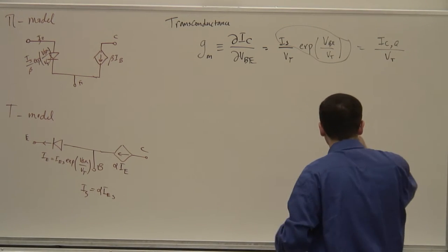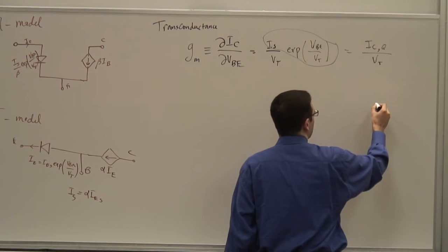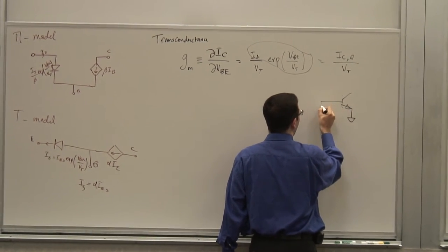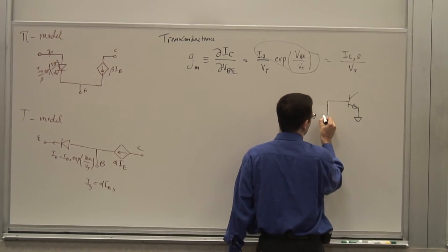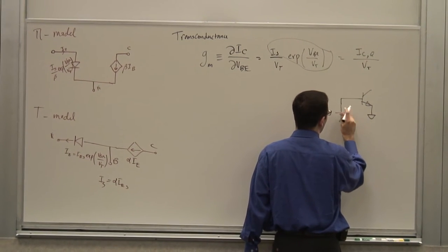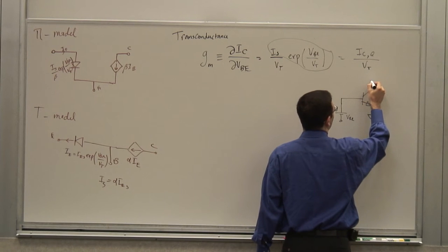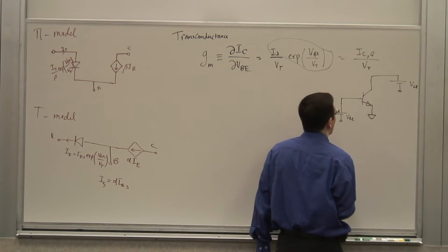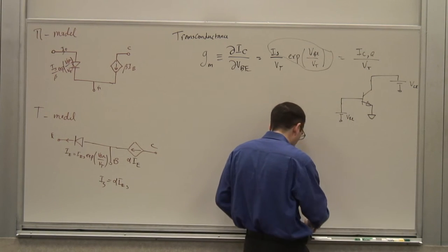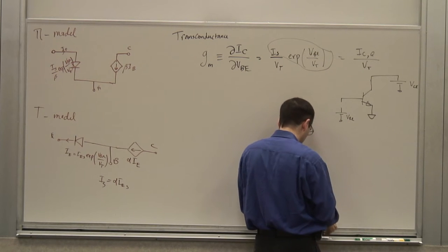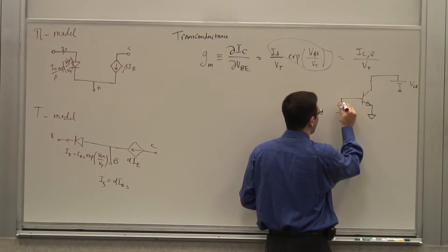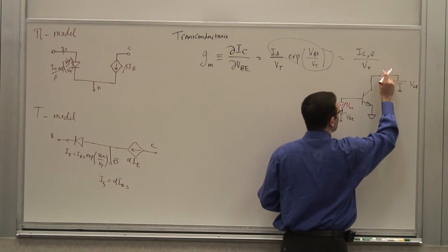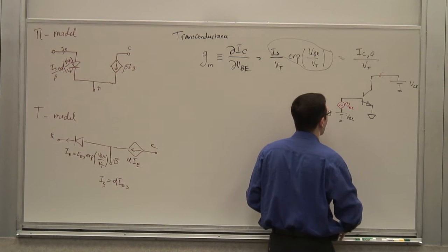What this means is that if you have an NPN transistor with a fixed VBE and a fixed VCE, and you introduce a small variation vbe, you can expect to see a collector current with two components: the original ICQ (the quiescent current when you didn't have the perturbation), plus a small perturbation.